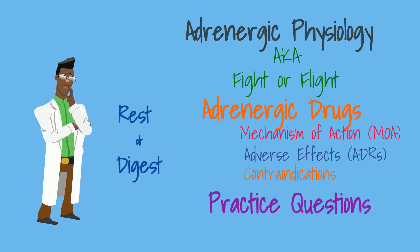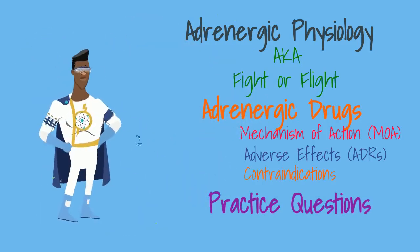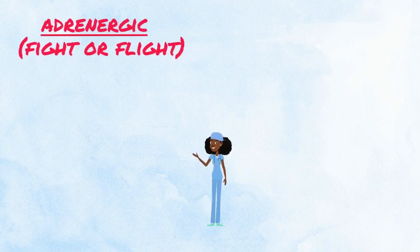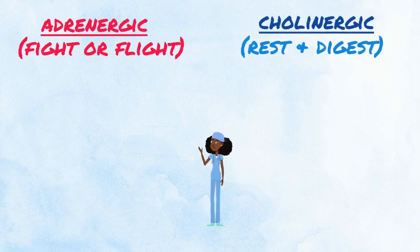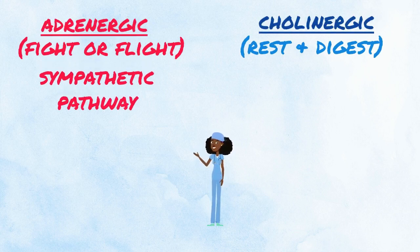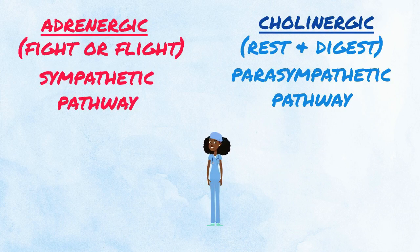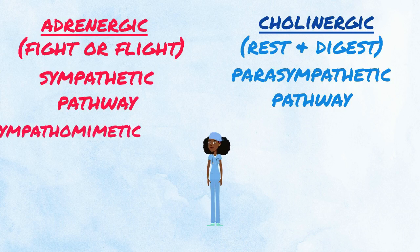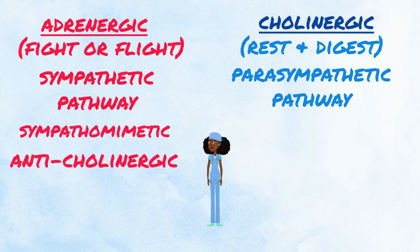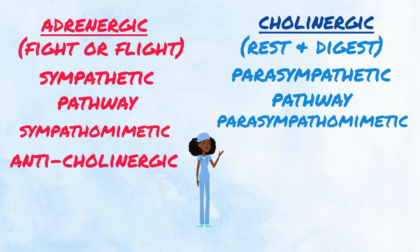There is no rest and digest going on here. Adrenergic and cholinergic pathways have many names. The adrenergic pathway is referred to as the sympathetic pathway, and the cholinergic pathway is referred to as the parasympathetic pathway. Sympathomimetic or anticholinergic refer to the adrenergic pathway, and parasympathomimetic and sympatholytic refer to the cholinergic pathway.